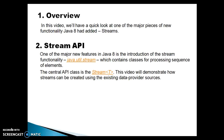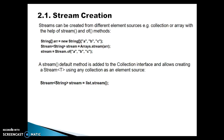This video will demonstrate how streams can be created using different data provider sources. Streams can be created from different element sources — a collection or array with the help of a stream or of method. Here in the slide, we have an array of a stream, and we have a utility class called Arrays, which is in the java.util package.